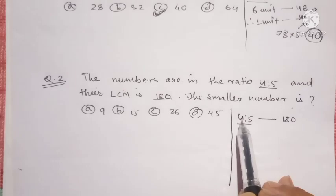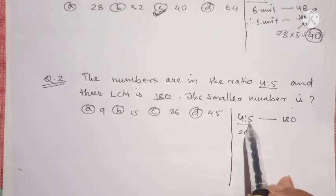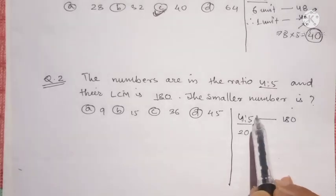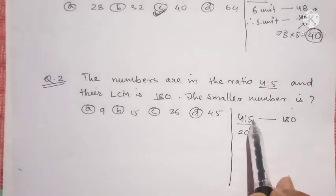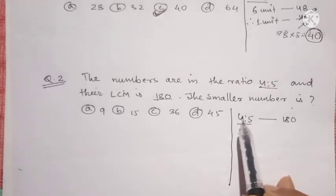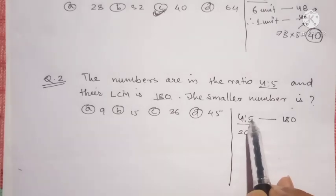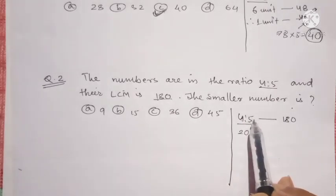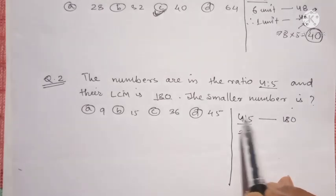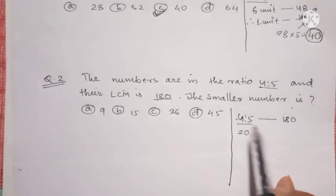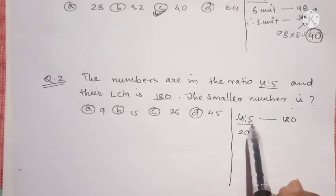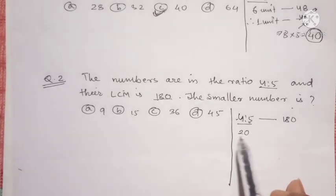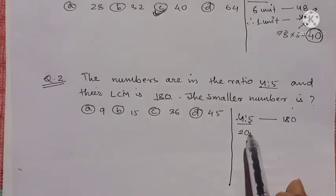That is a smaller number. If you have 5, it is 5, then you have double column and 10. If you have 5, then you have 15. If you have 5, then you have 15. If you have 5, then you have 20. If you have 20 units, then you have 5.